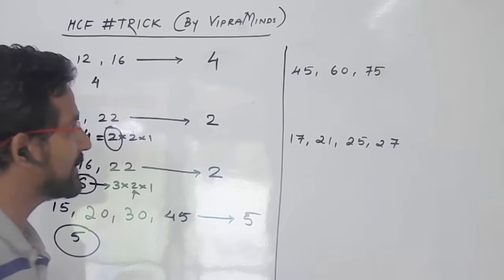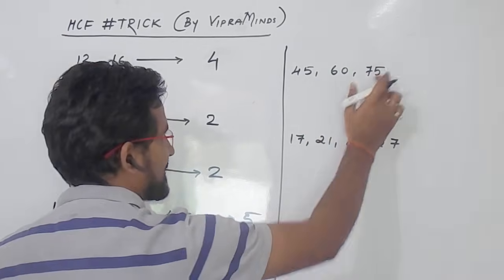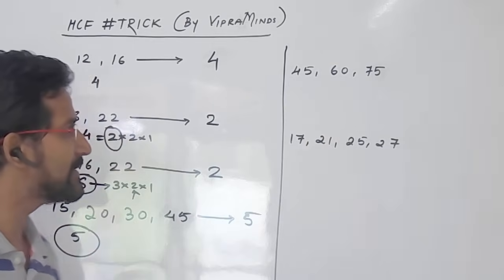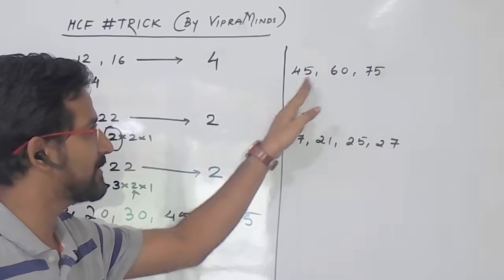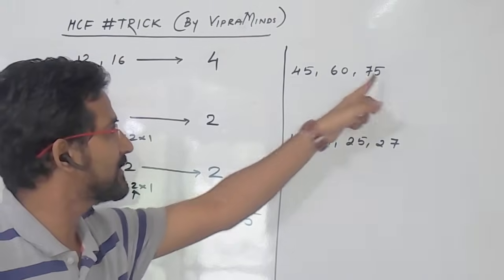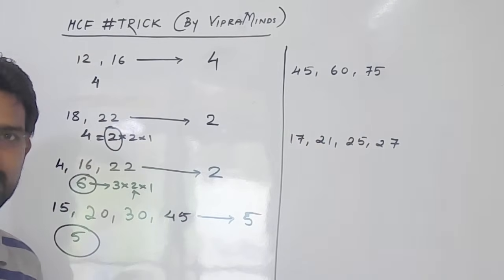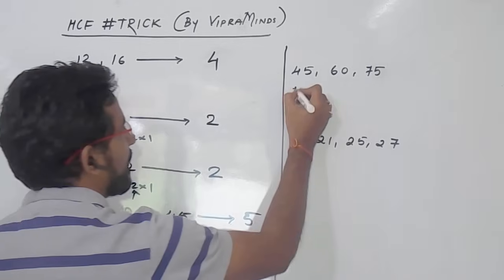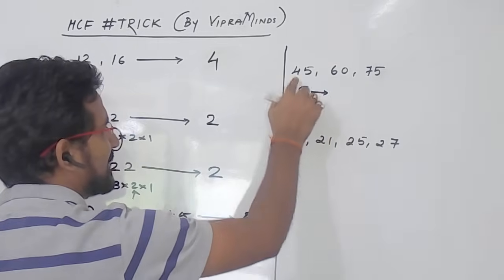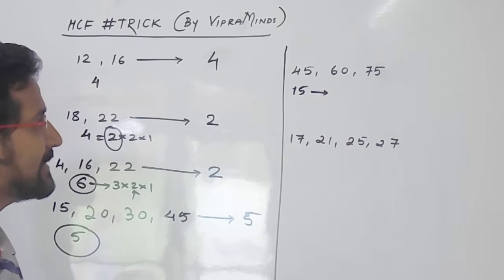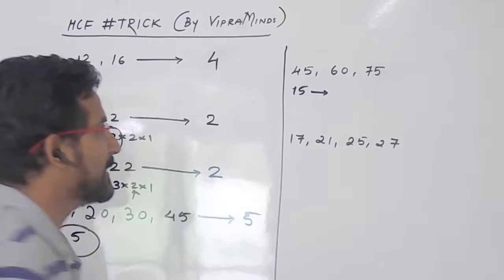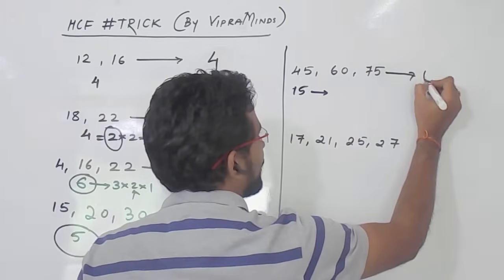Now we will see the next example: 45, 60 and 75. The least difference between these numbers — between 45 and 60 is 15, between 60 and 75 is also 15, and between 45 and 75 is 30. So the least difference here is 15. Whether 15 is the divisor of 45, 60 and 75? Yes, 15 is a divisor of all these numbers, so the HCF will be nothing but 15.